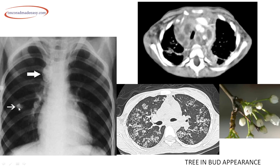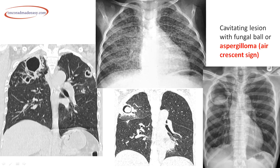On X-ray, nodular opacity with mediastinal lymph nodes represents the Ranke complex — the Ghon focus is visible. CT shows multiple necrotic peripherally enhancing lymph nodal masses. The CT image demonstrating endobronchial spread of TB shows tree-in-bud appearance: multiple small nodular lesions resembling a tree in bud, which is pathognomonic of endobronchial spread of TB.